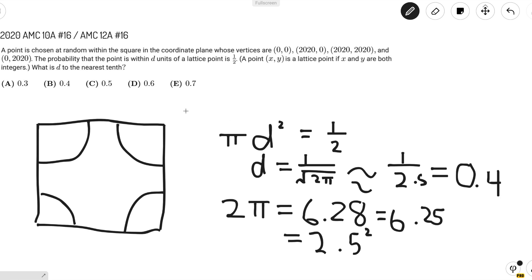Looking back at our answer choices, we see that 0.4 is indeed an answer choice, which means that the answer is B, 0.4, and we're done.